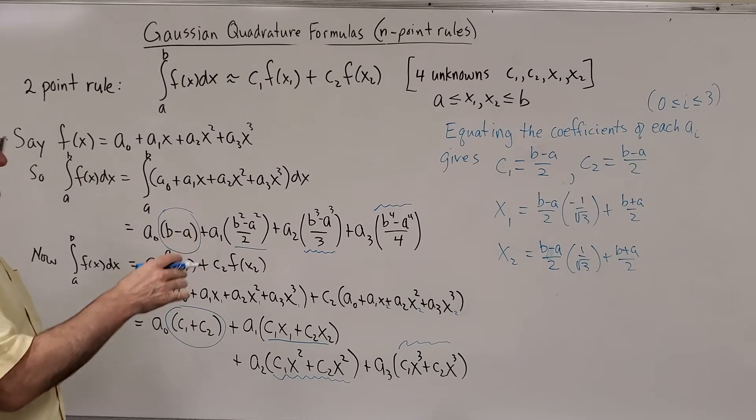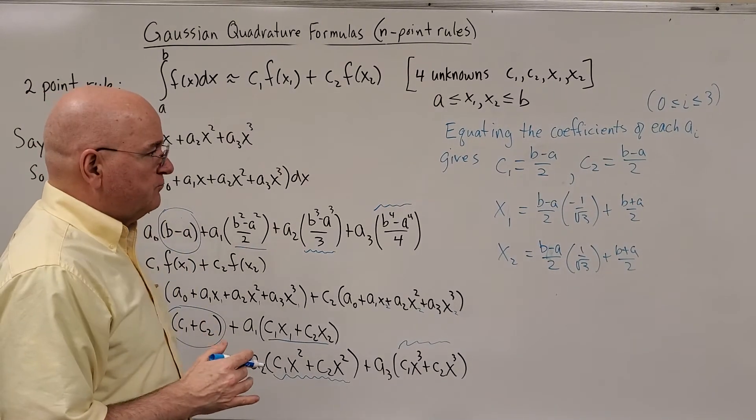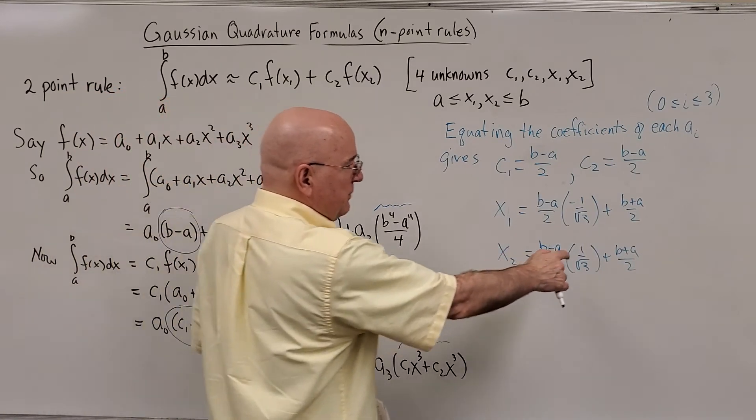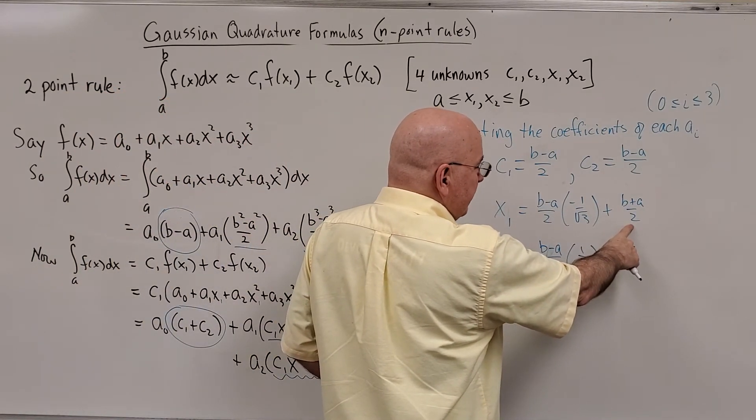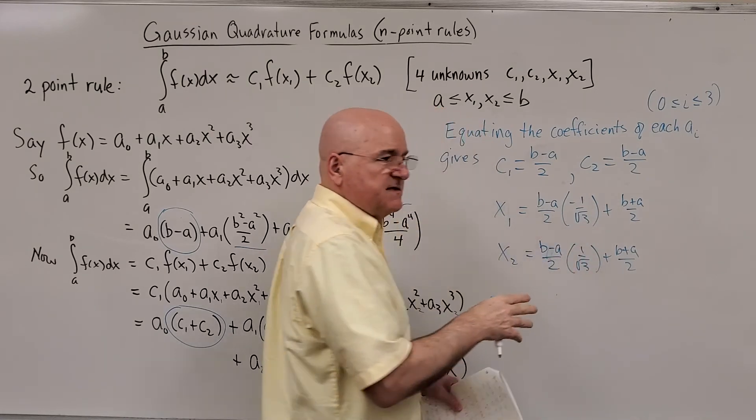So we can see that the X1 and the X2 are symmetric. How do we know that? Well, they're equal to the center point between A and B plus and minus the same distance.